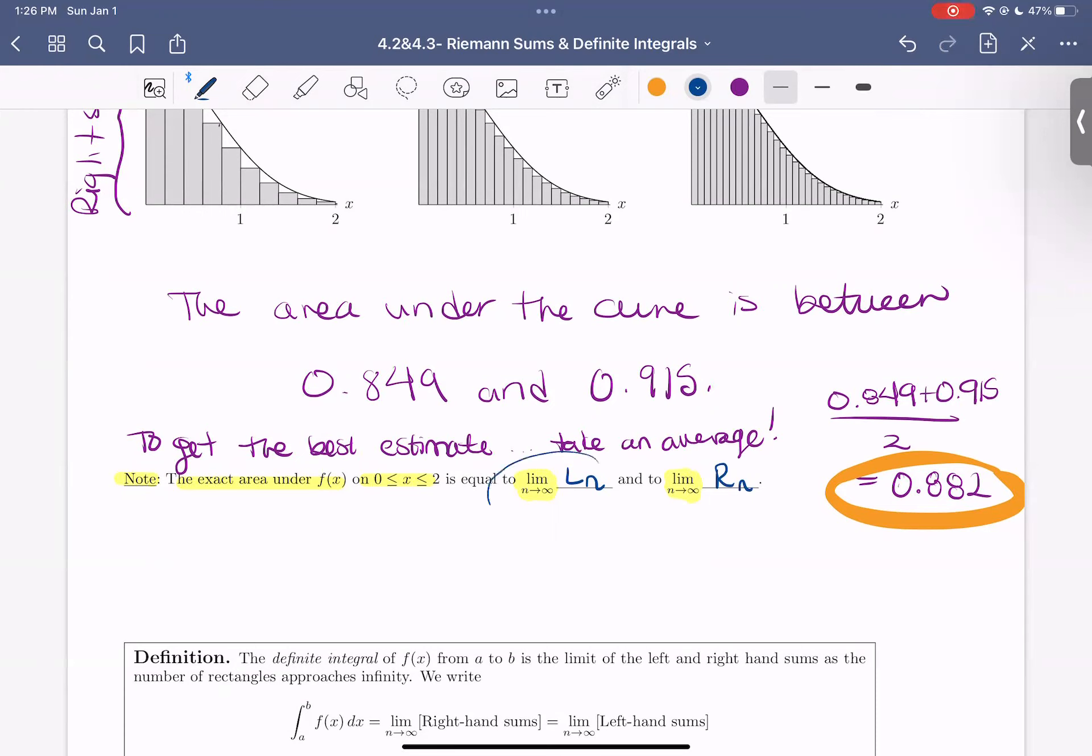So what this means is that if you take the number of rectangles going to infinity, then you're going to get the exact area under the curve. So in the next video and the next work we're going to do is set up these functions or these equations involving n to compute the left and right-hand sums. And then we'll take a limit to actually compute the exact area under the curves.